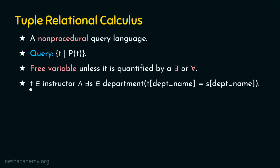In this example, t is a tuple variable belonging to the instructor relation, and if there exists another tuple variable s belonging to the department such that the department name on tuple t equals the department name on tuple s — this is an example query in tuple relational calculus. Here, t is a free variable because it is not bound by any quantifier, whereas s is a bound variable because it is quantified by the existential quantifier.